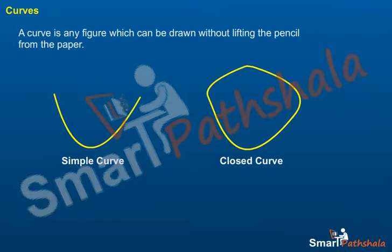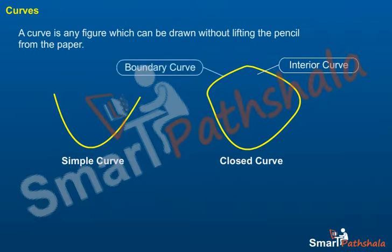5. In a closed curve, there are three parts: 1. Interior or inside of the curve. 2. Boundary or on the curve. And 3. Exterior or outside of the curve.